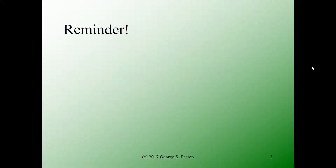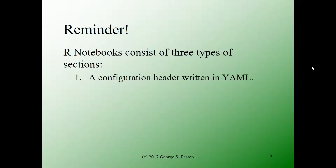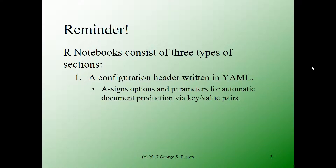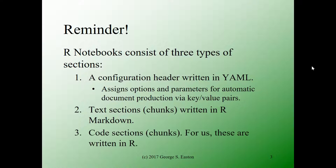I wanted to remind you that R notebooks are constructed with three types of sections. At the very beginning is a configuration header written in YAML, which assigns options and parameters that control the software that automatically generates the document, done by assigning values in key-value pairs. The next kind of section are text sections or chunks written in R Markdown, and the last kind are code sections or code chunks written in R.